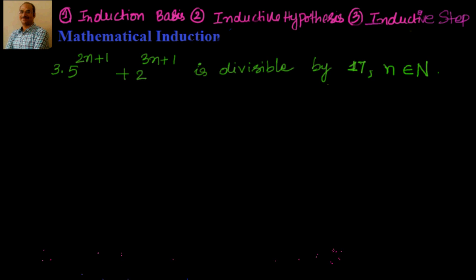Welcome back. We are solving some examples as part of mathematical induction. We have to prove that the expression 3 into 5 to the power of 2n plus 1, plus 2 to the power of 3n plus 1, is divisible by 17, where n is a natural number.